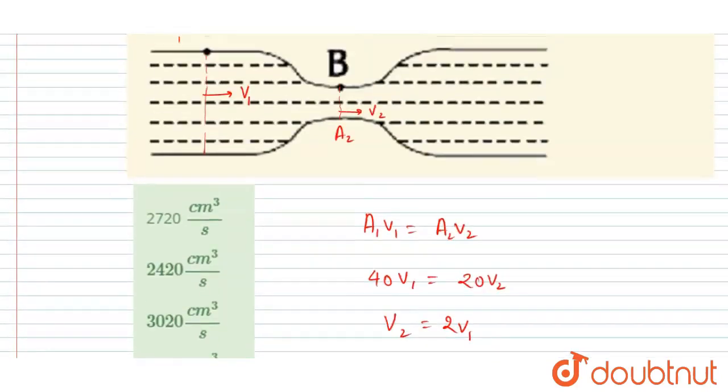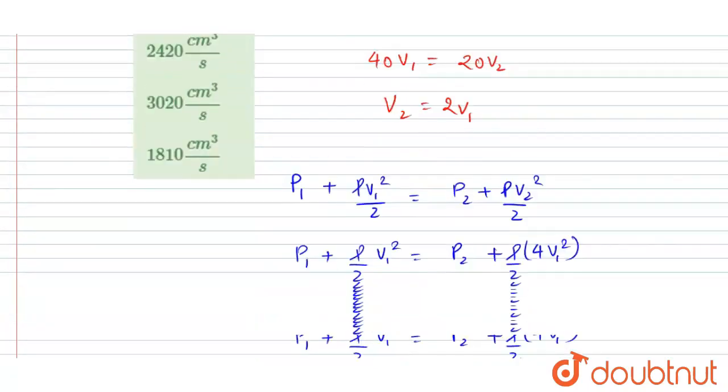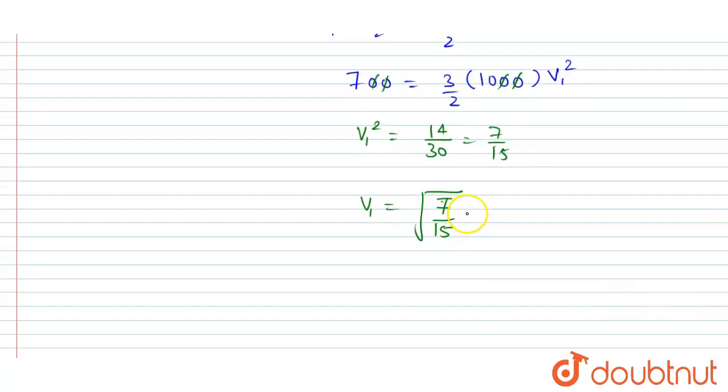Now we can calculate the volume flow rate by applying A1 V1. So we will write the volume flow rate is, so the V1 is this much into 100 centimeter per second.